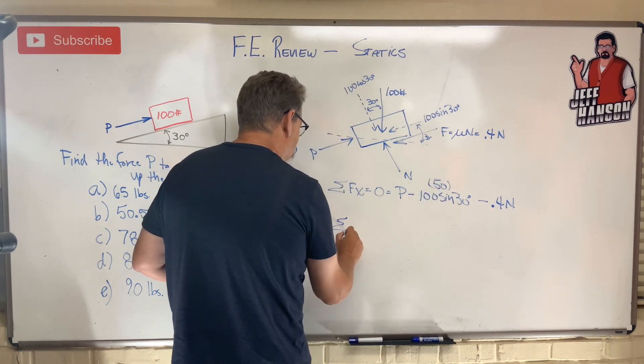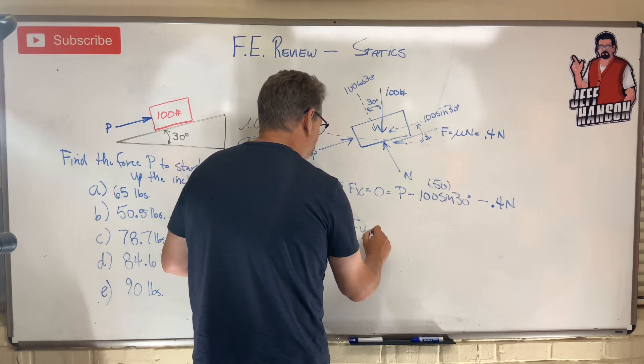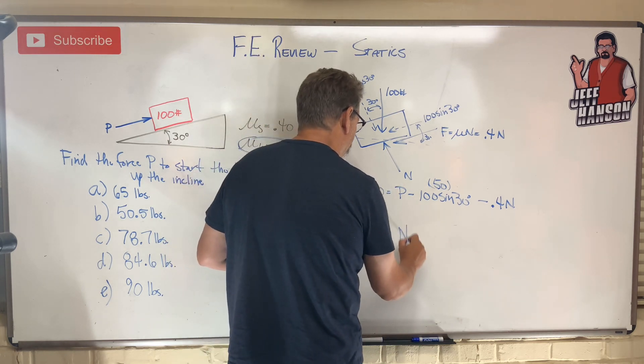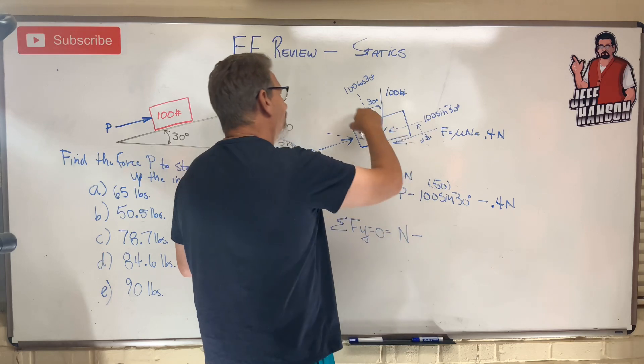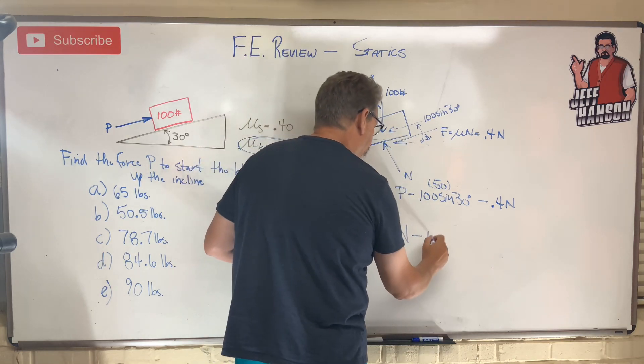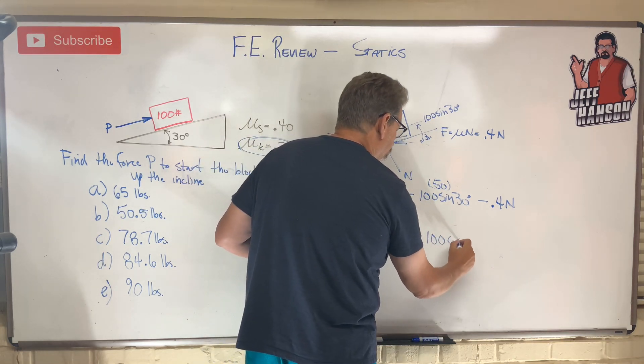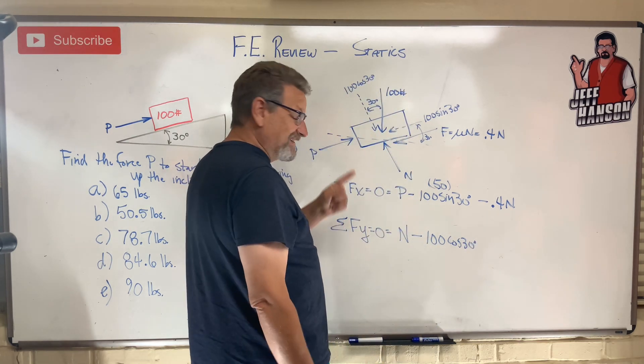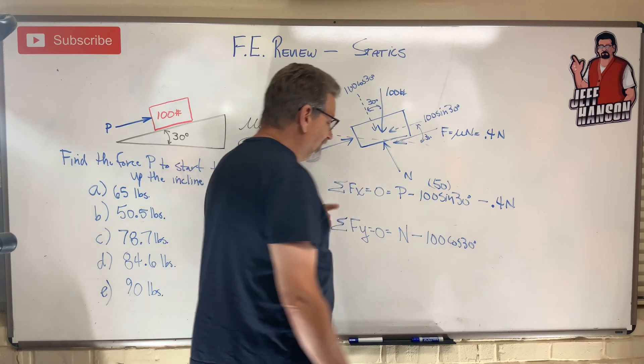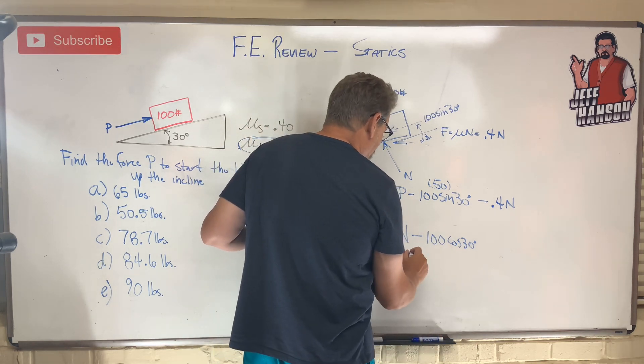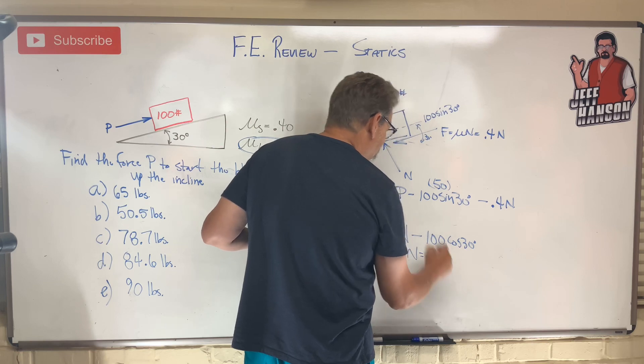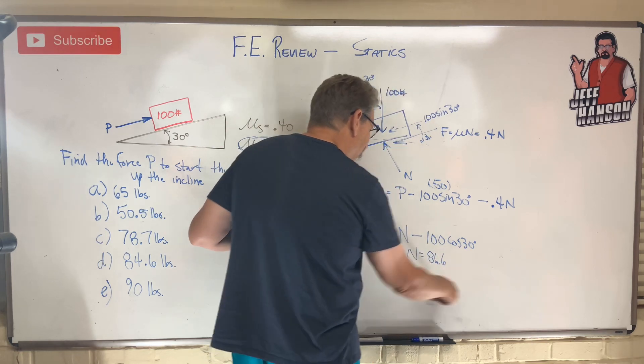Let's see what this is: sum of the force in the y. Going uphill I've got N, and going downhill I've got 100 cos 30. I happen to know the cosine of 30 is 0.866. This saves you time if you know these things. So N equals 86.6. Put that in right here, 86.6.